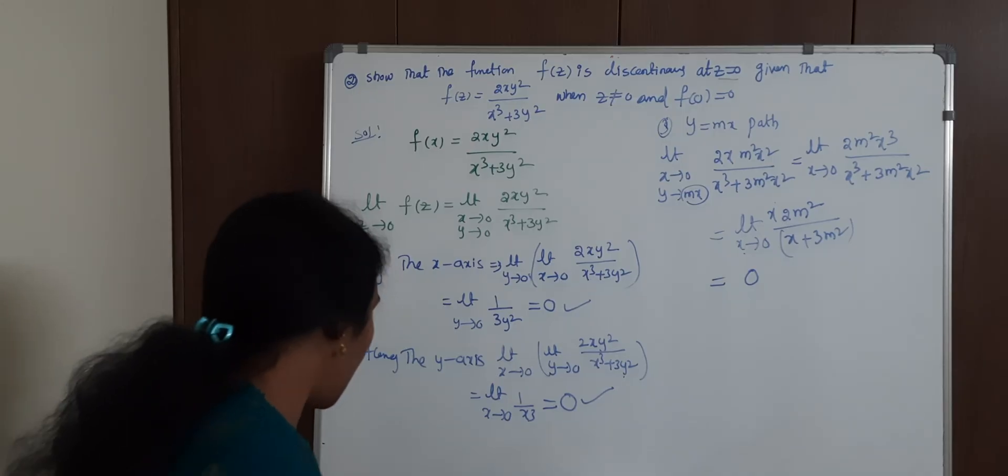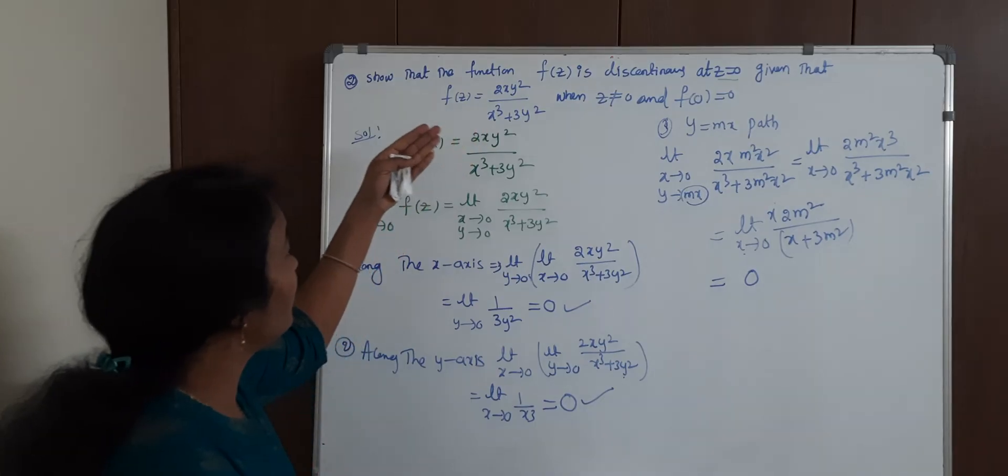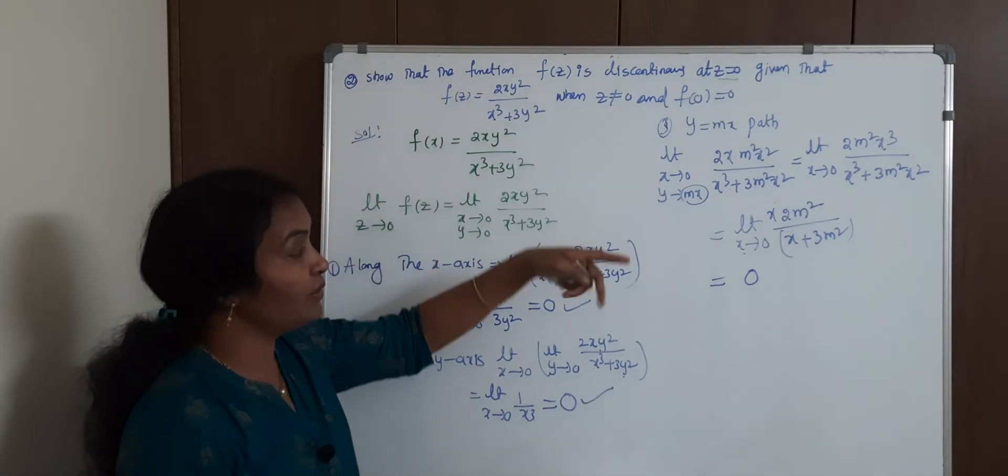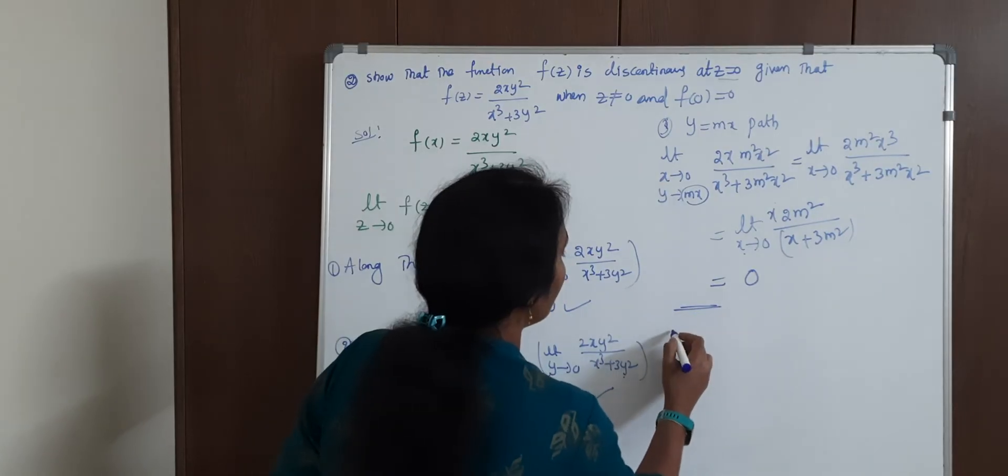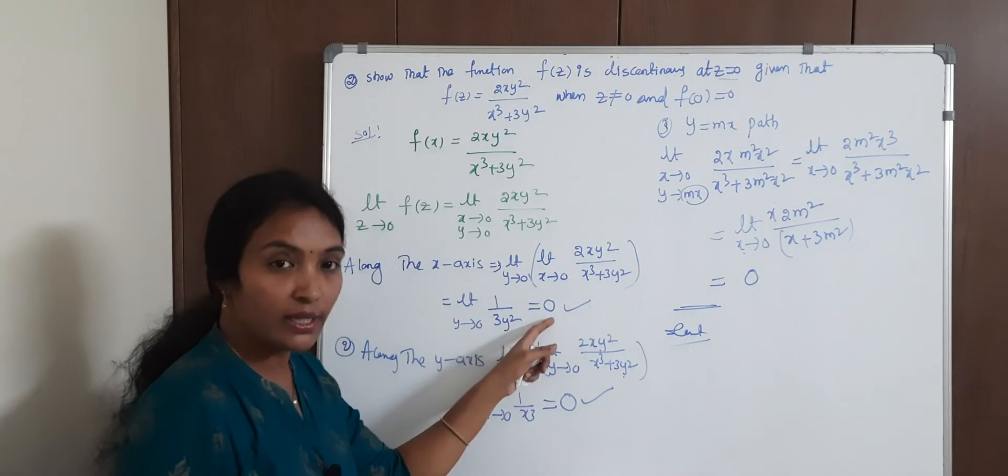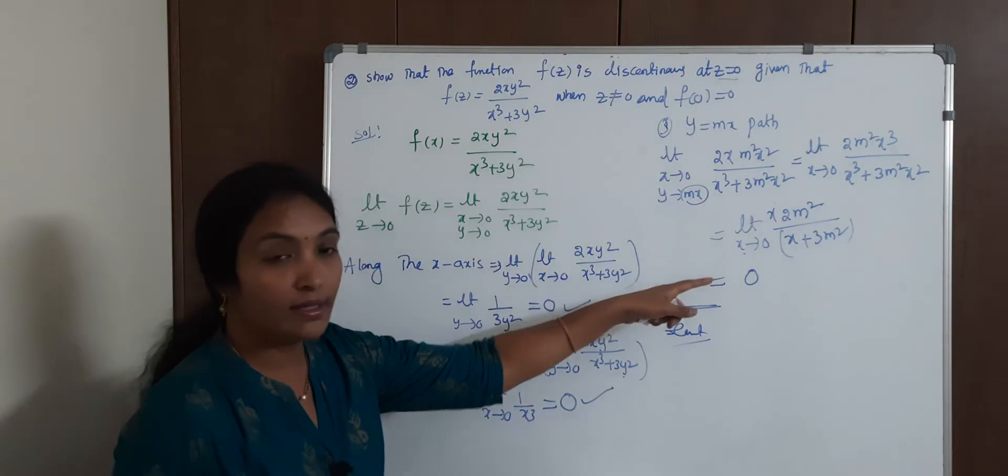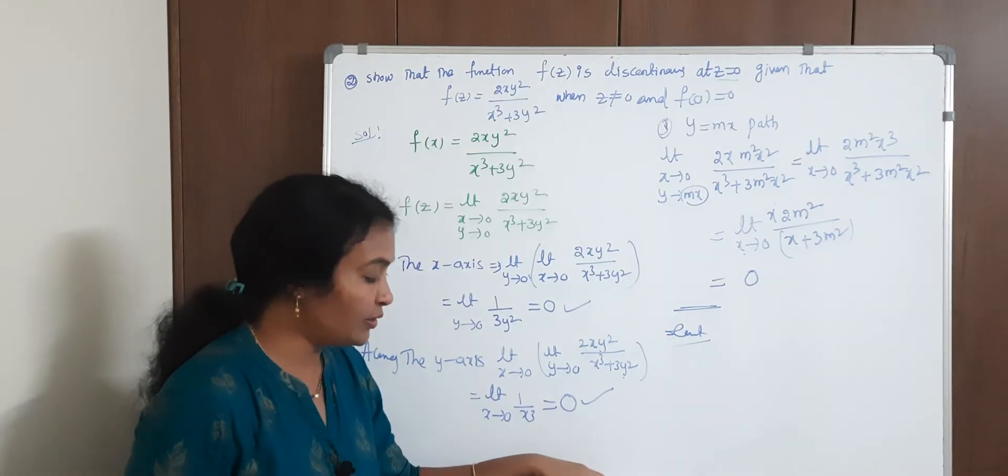See, this is continuous. I have to show that the function is discontinuous, but it is not discontinuous. It is a continuous function because along x-axis, along y-axis, and this path are all the same.